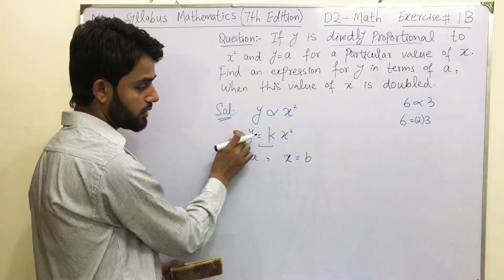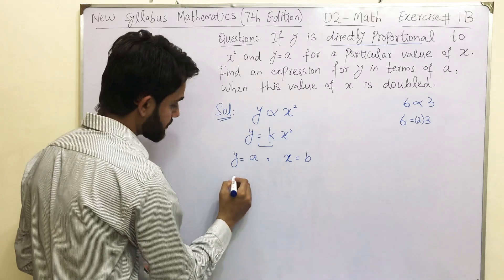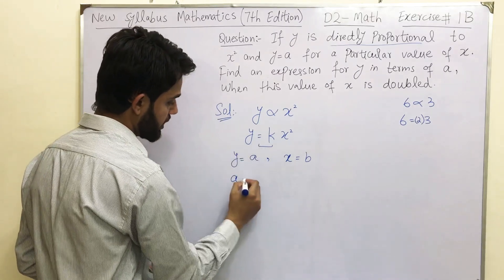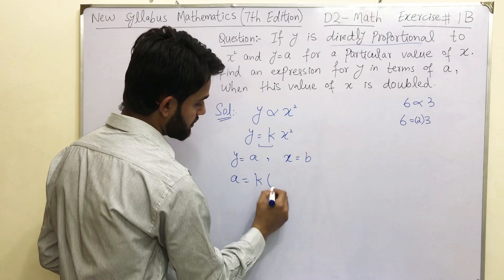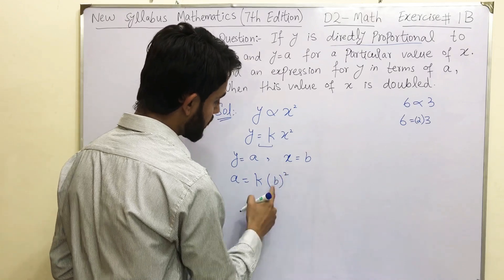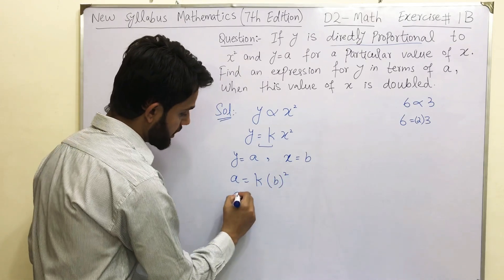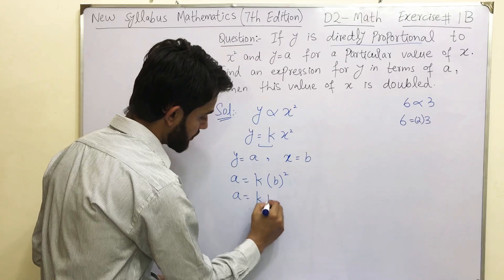So this is a particular value of x which I have taken over here. Plug in these two values on this equation. Y is equal to a. This is k and x is b. So open this: a equals to k b square.